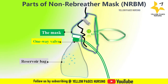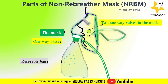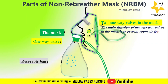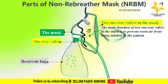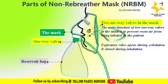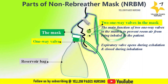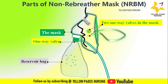The mask also has two one-way valves, called expiratory valves, one on each side of the mask. Their main function is to prevent room air from being inhaled by the patient. The expiratory valves open during exhalation, allowing exhaled air to escape from the mask, and close during inhalation, thereby preventing the patient from rebreathing the exhaled air.